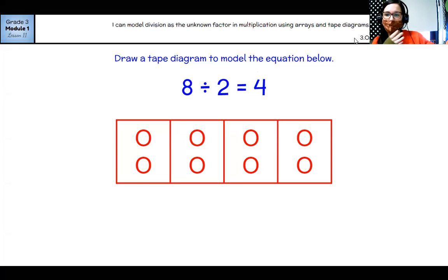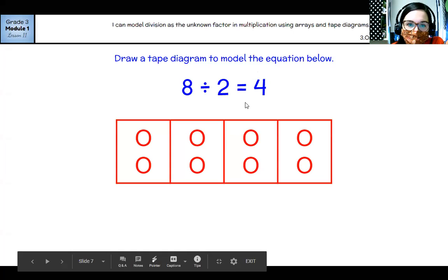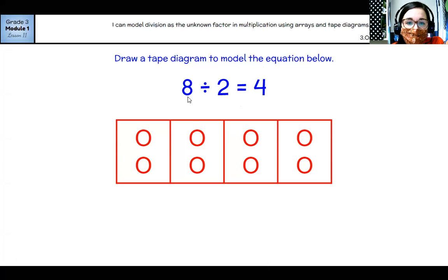Okay. Now we're going to look at something called a tape diagram, which Mrs. Thorsby loves. They are really helpful in division and multiplication. So let's look at the example that is drawn for us. So eight is my total number of circles. Divided by two equals four. So what they did is they said, okay, you got eight total. You have to put two in each group until you run out. And how many groups do you have? Four. So I can model division as the unknown factor in multiplication using arrays and tape diagrams.